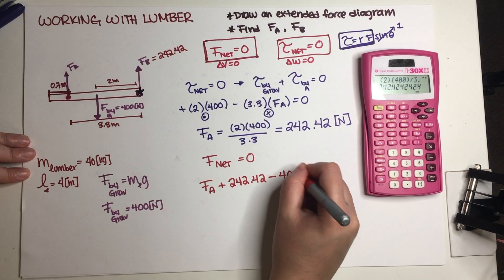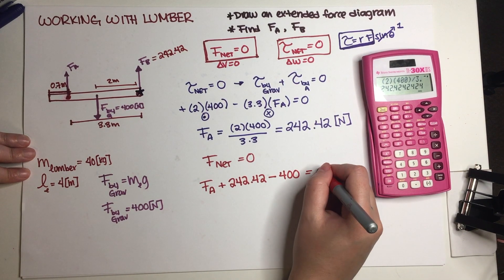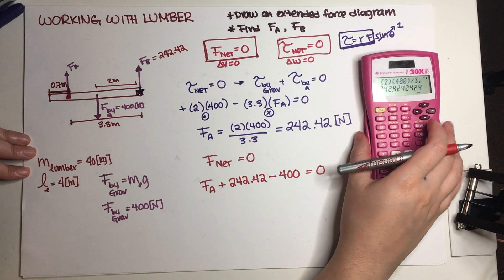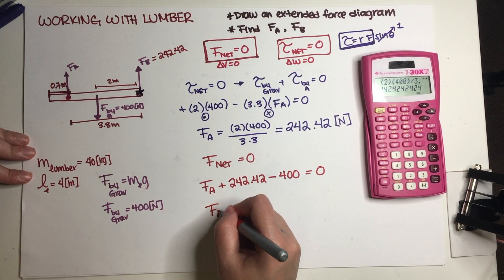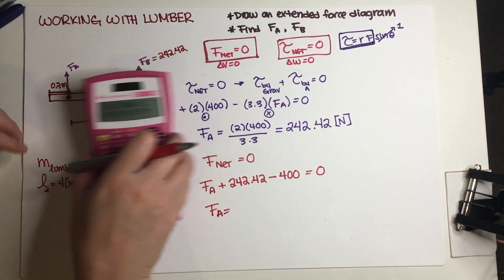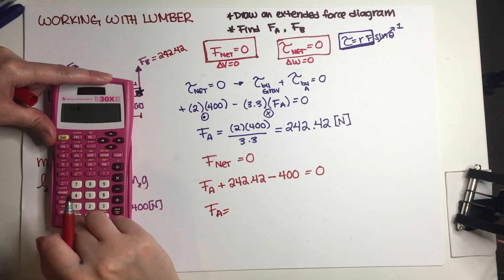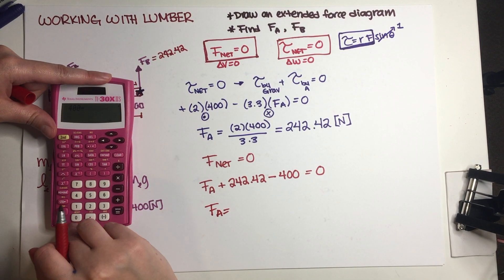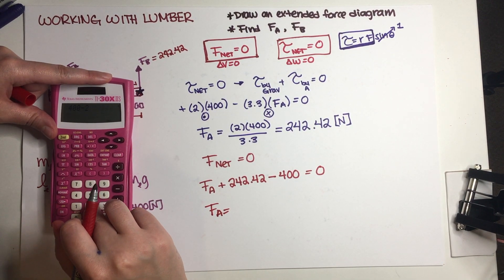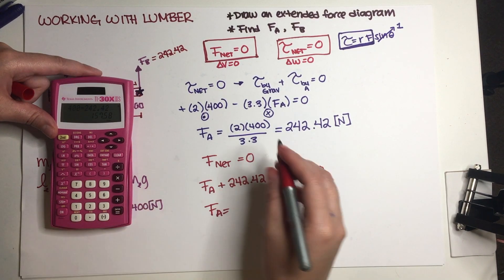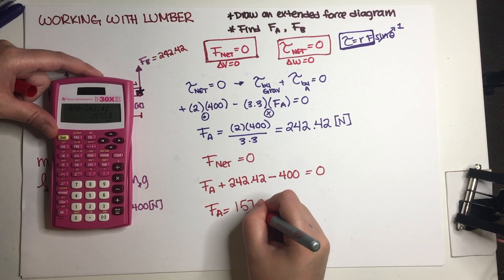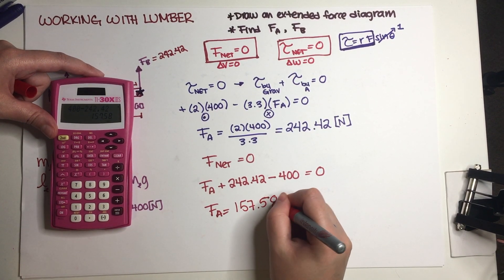We have two forces going up, one force going down, so we have F_A plus 242.42 minus 400 and this needs to be equal to zero. So force by A is just 400 minus 242.42 equals 157.58 newtons.